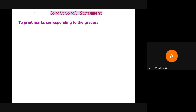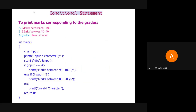Here we are going to print marks corresponding to the grade using an if-else-if ladder. We input the character. We check if the input is 'a', then we print that marks is between 90 to 100. In the else-if part, we check for 'b', and in the else part, we print it as an invalid character.